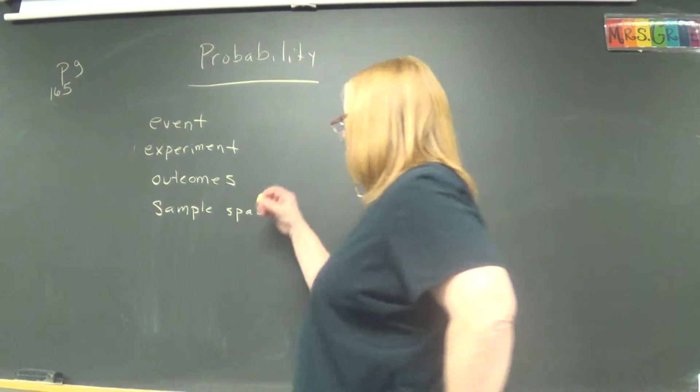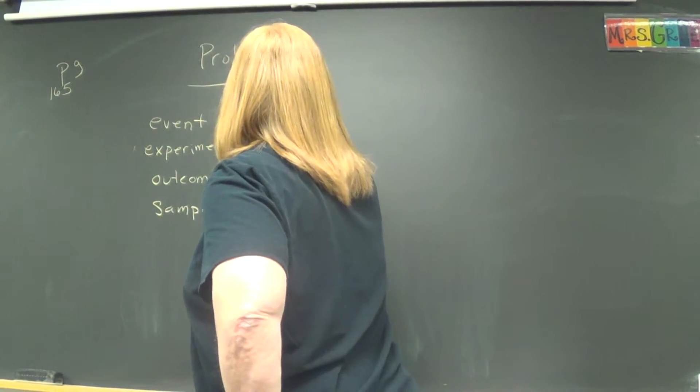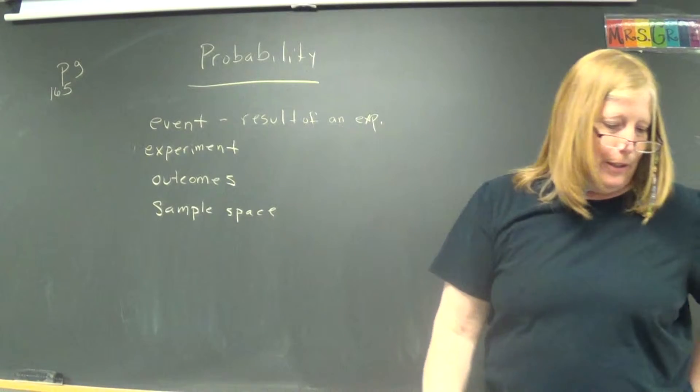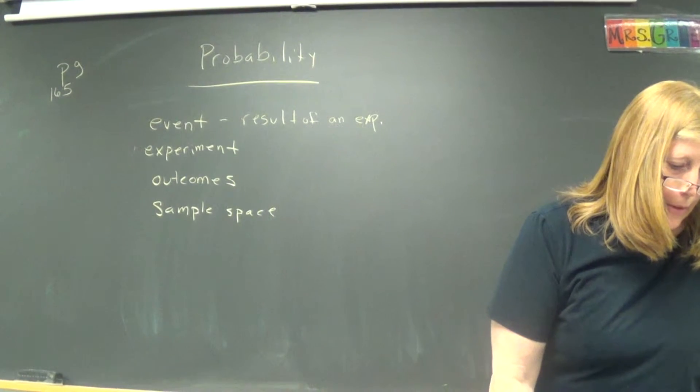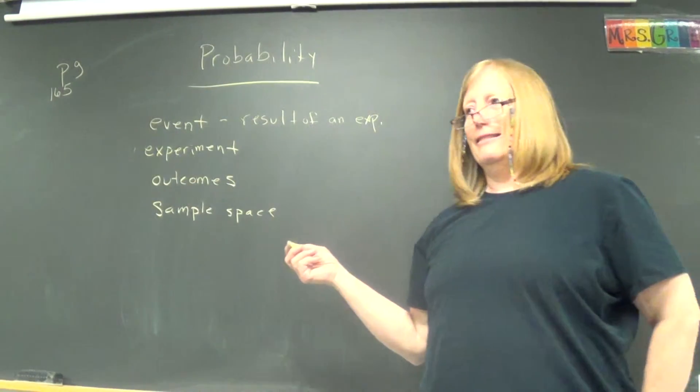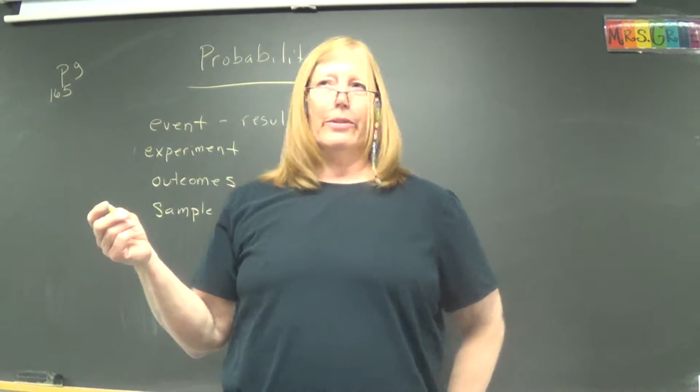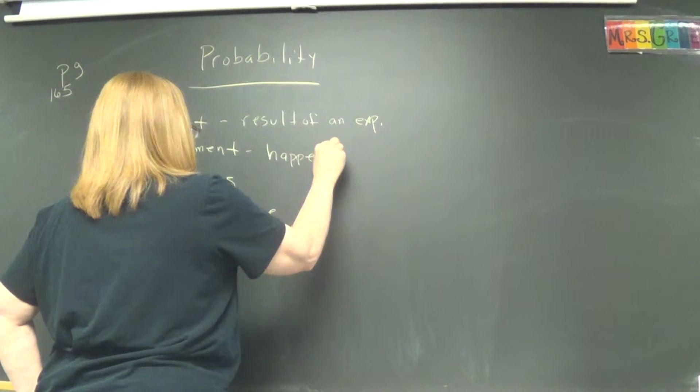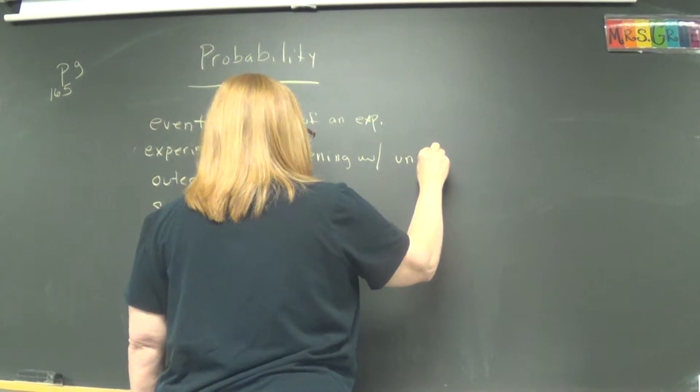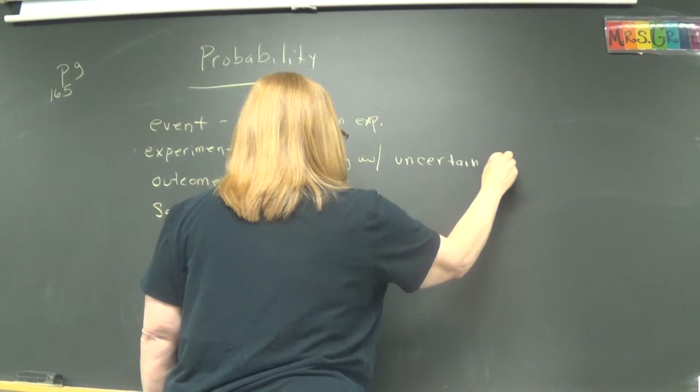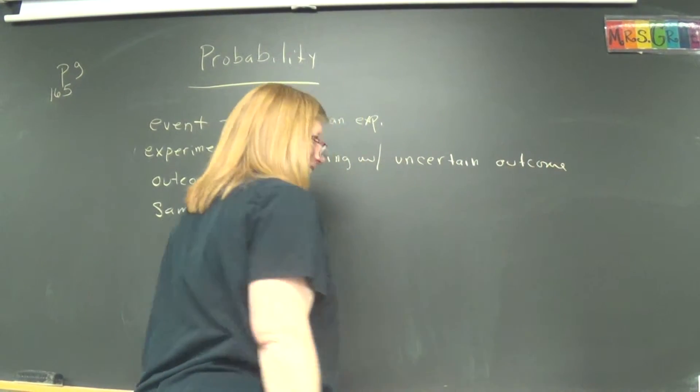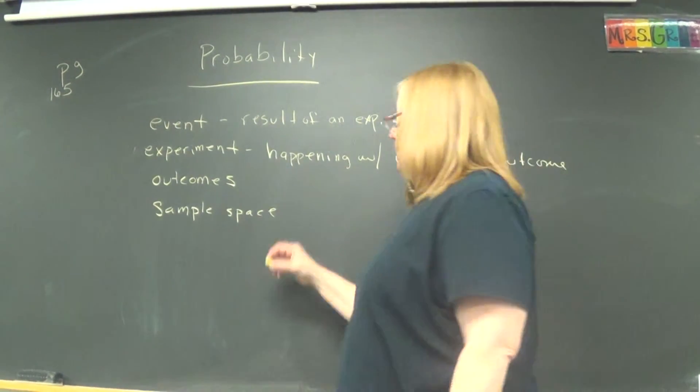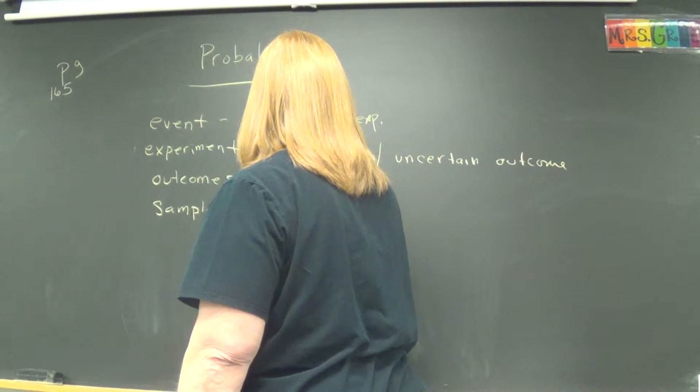So we need to know what an event is. It's the result of an experiment, which we have to define next. Result of an experiment. And what's an experiment, then? An experiment we'll define is any happening which has an uncertain outcome, like rolling a die or flipping a coin. So happening with uncertain outcome.